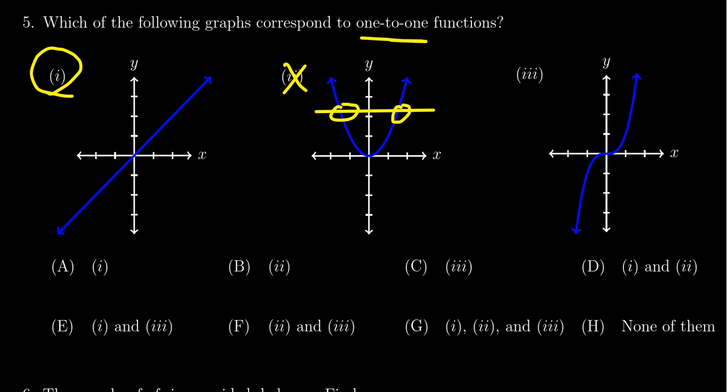And then if you look at three right here, same thing. Horizontal lines intersect the function only at one point. Therefore, three is, in fact, a one-to-one function. So the correct answer is going to be one and three, which means we would select choice E.